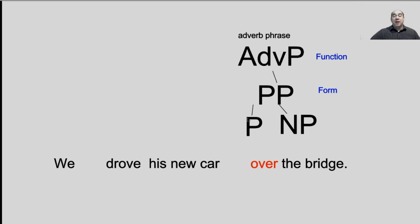An adverb phrase, like the adjective phrase, is going to have a preposition, and the preposition is going to have an object — in this case, "the bridge." The sentence is: "We drove his new car over the bridge." I see a preposition — "over" — which gives me a prepositional phrase. That's the form. What's its function? "Over the bridge" — is that describing the car? Well, "new" would be describing the car. "Over the bridge" is actually describing where or how he drove, so it's describing the verb. Since it's describing the verb, the function is an adverb phrase. Its form is a prepositional phrase, and I can break down the parts.